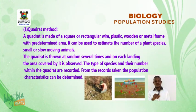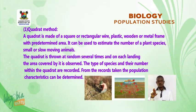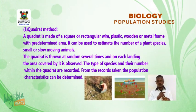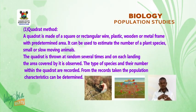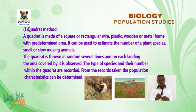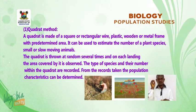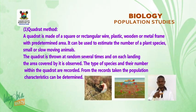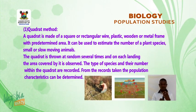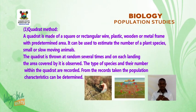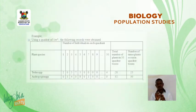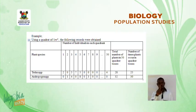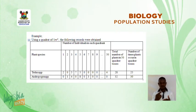Sampling Technique 1 — Quadrat Method: A quadrat is made of a square or rectangular wire, plastic, wooden or metal frame with a predetermined area. It can be used to estimate the number of a plant species or small, slow-moving animals. The quadrat is tossed at random several times, and on each landing, the area covered by it is observed. The type of species and their numbers within the quadrat are recorded, and from these records, population characteristics can be determined.